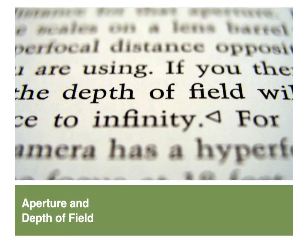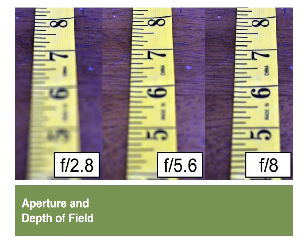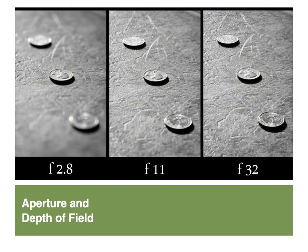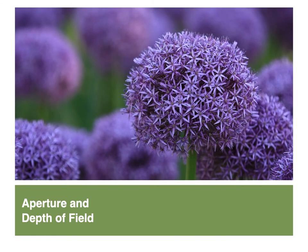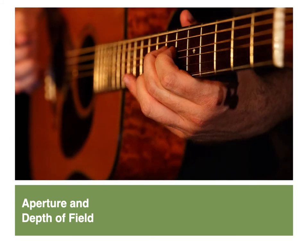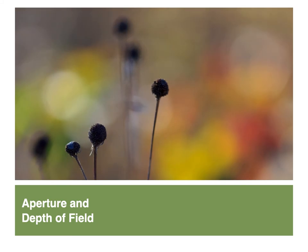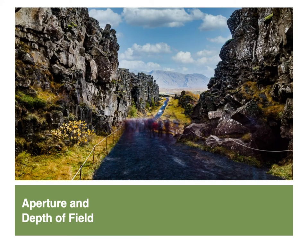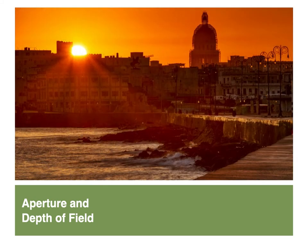Next is aperture, which controls the depth of field—a measure of how much of the image is in focus from front to back. Wider apertures create a shallower depth of field; narrower apertures create a deeper depth of field. A wide aperture and shallow depth of field work to isolate a subject in focus while throwing the rest of the image out of focus. A narrow aperture and deep depth of field carries the viewer deeply through the scene from front to back.